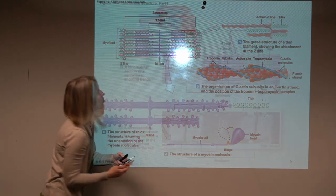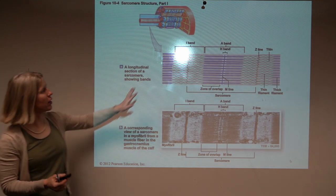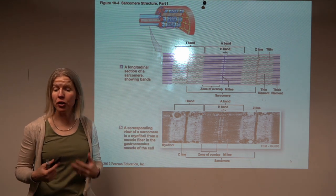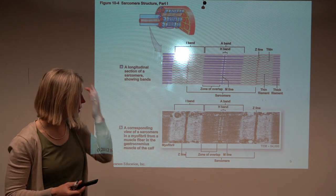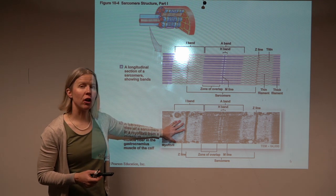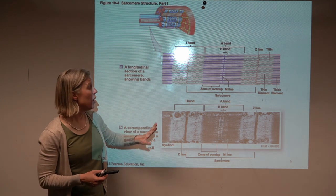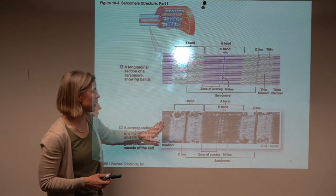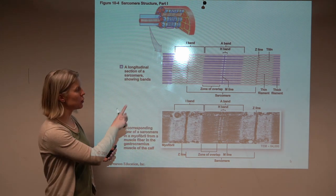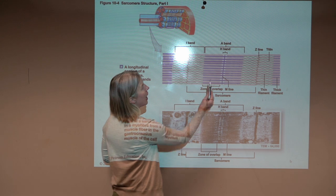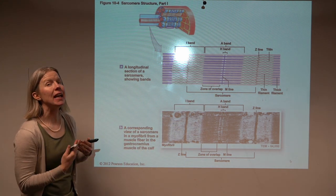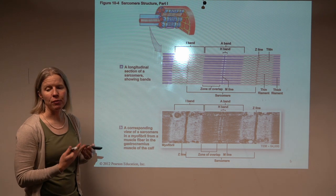Now the sarcomere, this is an actual microscopic image. So it's actually possible to see this. And the way it appears when you're under a microscope, you get this repeating pattern of dark bands, light bands, dark bands, light bands. And so these all have names. And then this cartoon picture kind of helps you see what's actually in that region of the sarcomere.